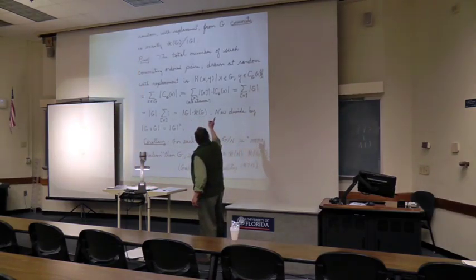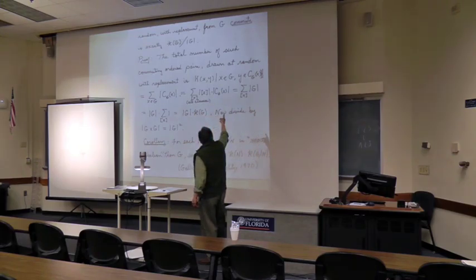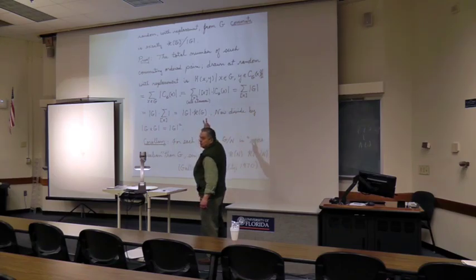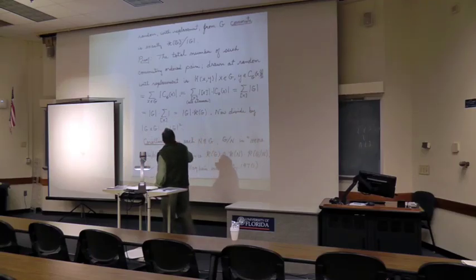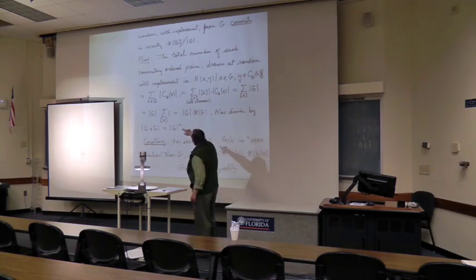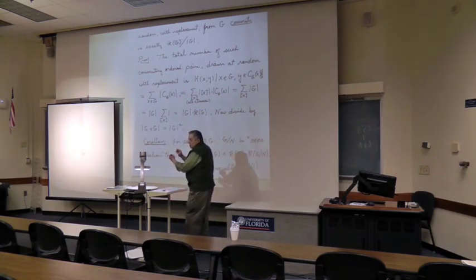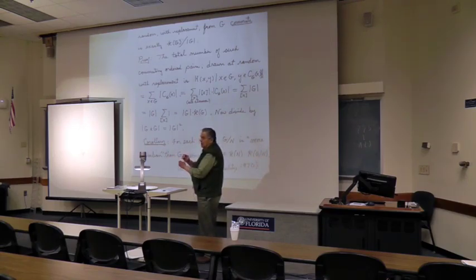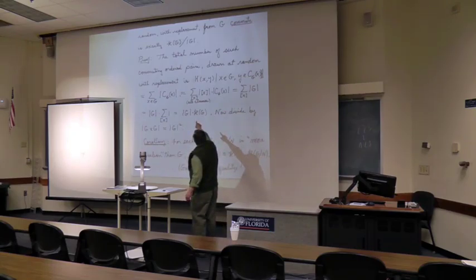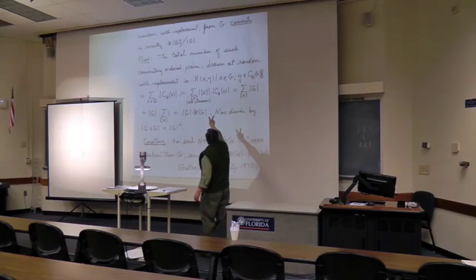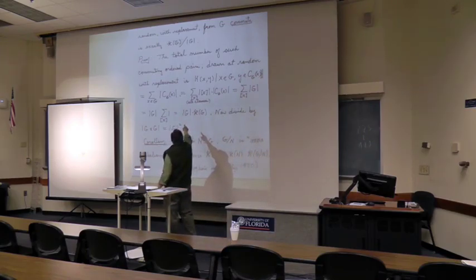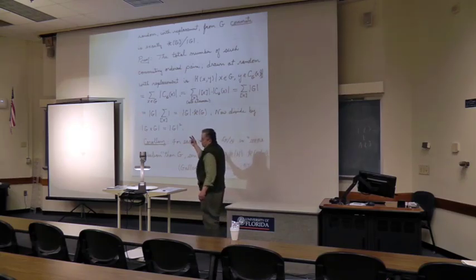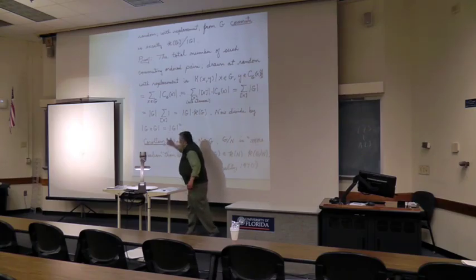If you want to count the number of commuting ordered pairs, draw at random with replacement, the set of pairs X in G and Y in G such that XY equals YX. You count the number of ordered pairs, pick an X in G and then its centralizer, and you go through all the elements of G and add them up. Every element in the same class as X has the same size centralizer. So I sum over the distinct classes: the size of the class times the size of the centralizer. The product of those two is the size of G. Factor out G, count one K times, G times K. Now divide by the total number of ordered pairs, so you get K of G over G.